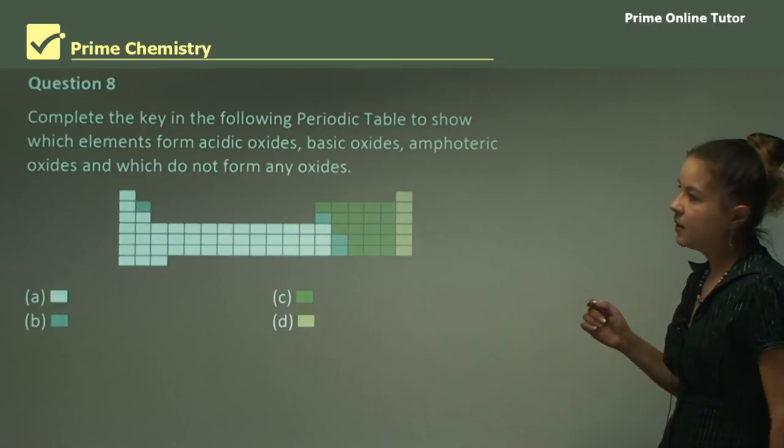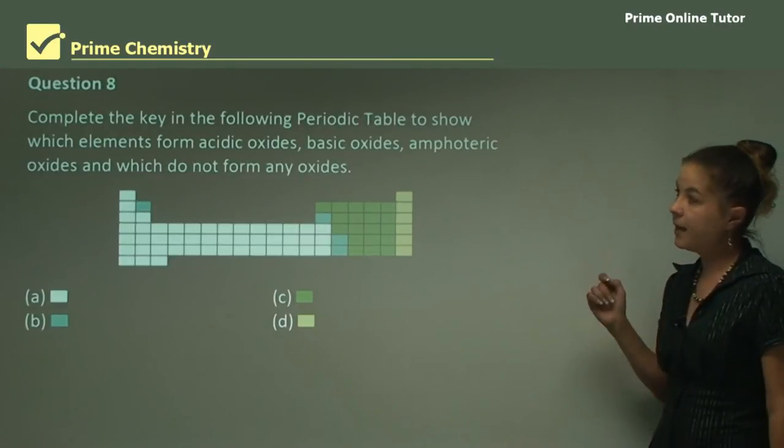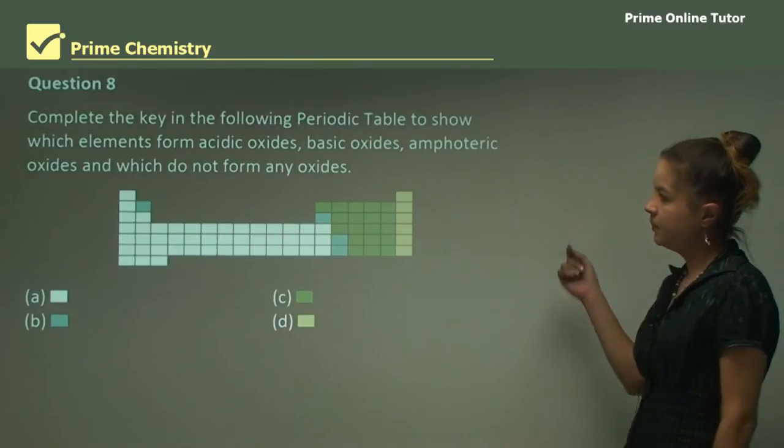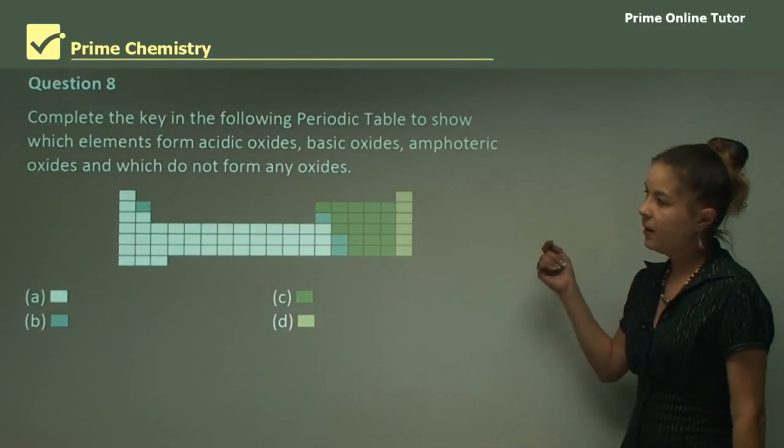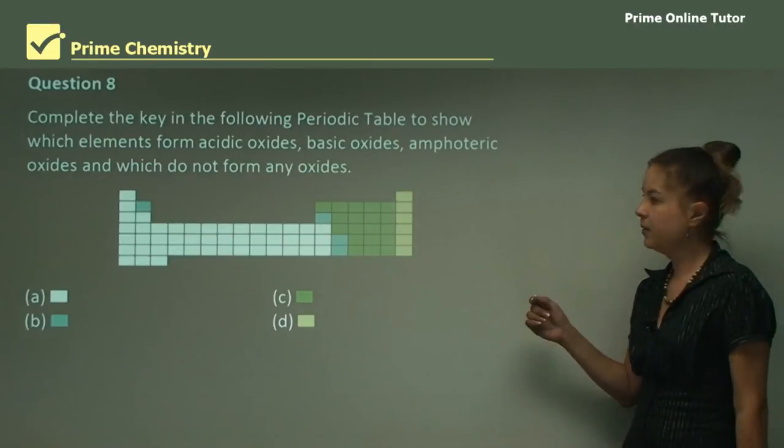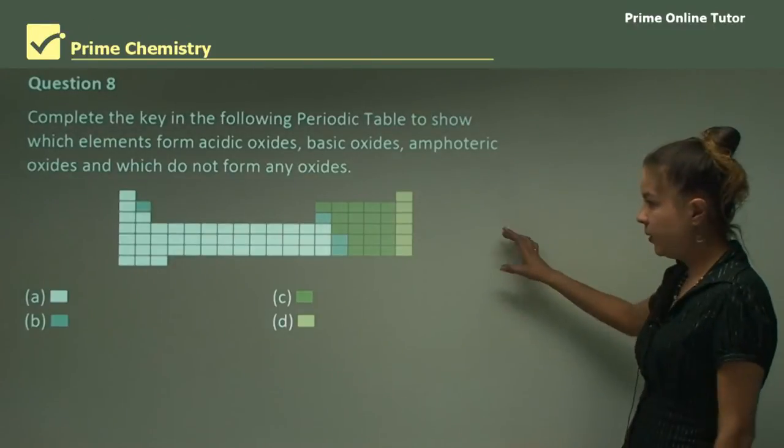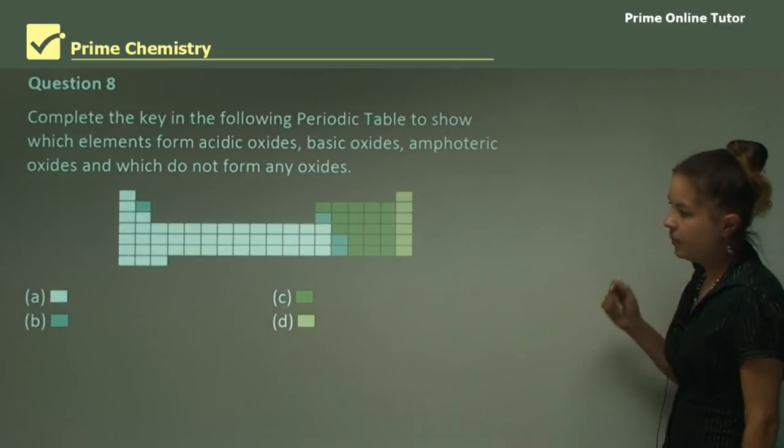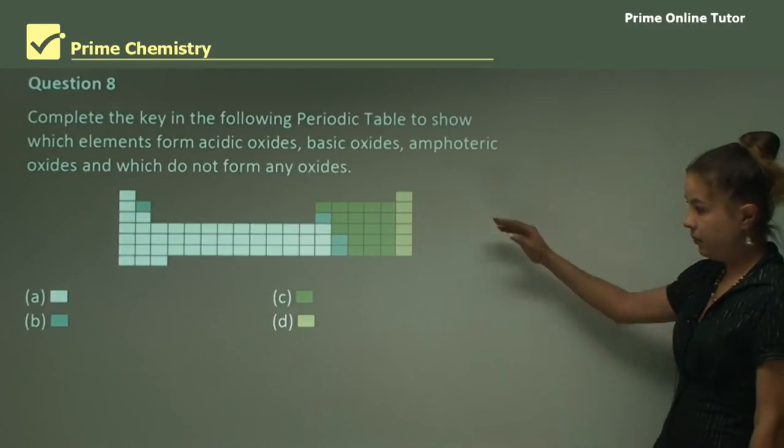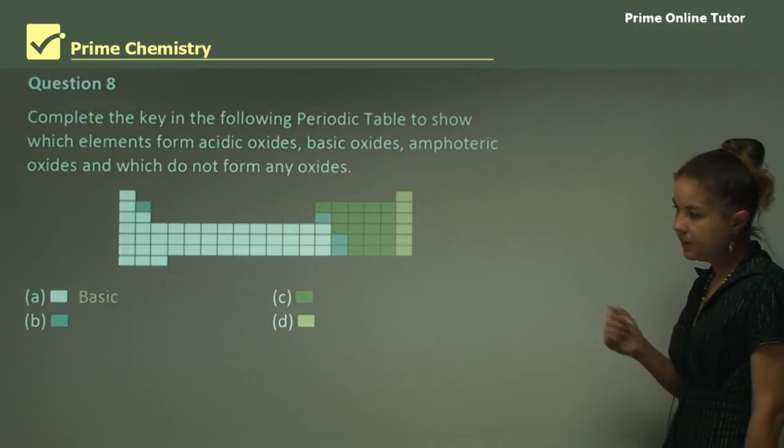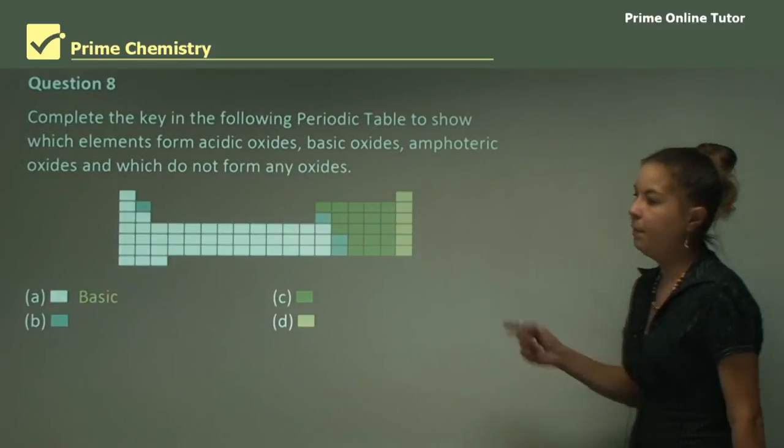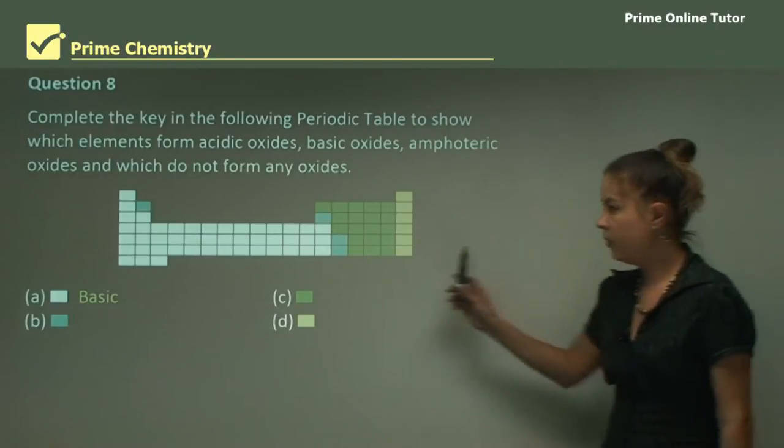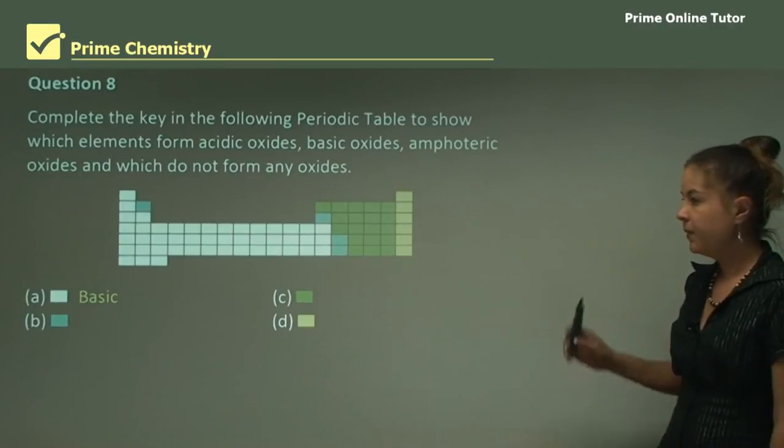Question 8: Complete the key in the following periodic table to show which elements form acidic oxides, basic oxides, amphoteric oxides, and which do not form any oxides. If you remember back to the start of the lesson, we had a picture of this periodic table. We need to label A, B, C, and D with different colors. A forms basic oxides because they're all on the left of the periodic table and they're metallic.